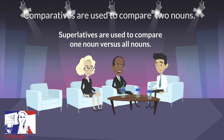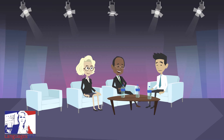'No' is used to show the quantity of something. It is equivalent to 'not any'. For example: 'there is no ticket left', 'no students have signed up yet'. We also use 'no' to emphasize the lack of something: 'we have no time' / 'we don't have any time'.